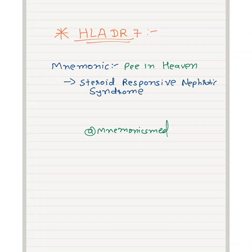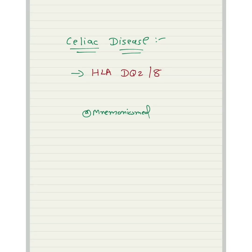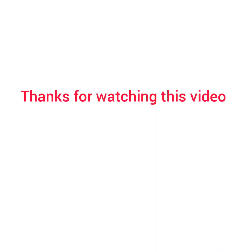Now we will learn about HLA-CW6. CW6 — you can remember via 'Cis Vulgaris' — it is for Psoriasis Vulgaris. Another disease is Celiac disease, which is for HLA-DQ2 and HLA-DQ8. You can easily remember via these mnemonics. Thanks for watching this video, please like, share, and subscribe to our channel.